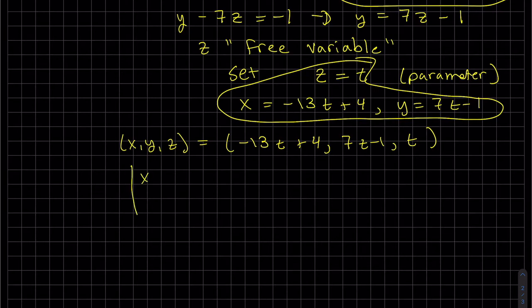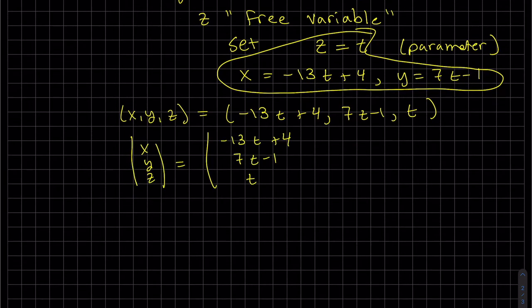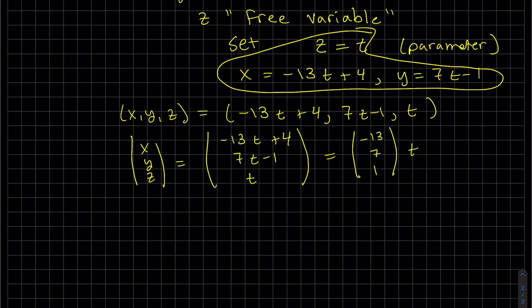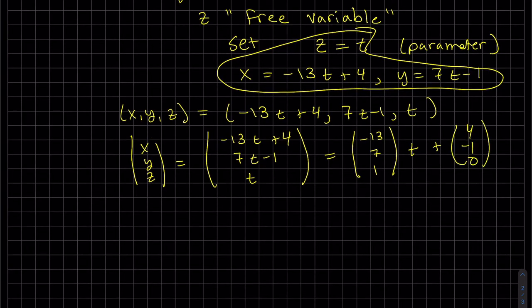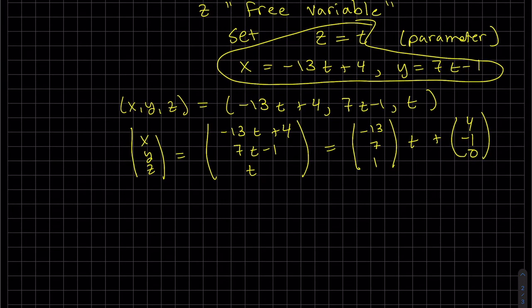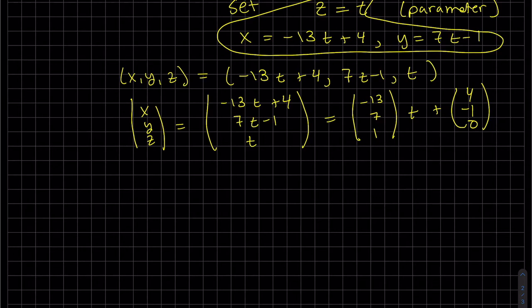Again, we can do it column wise, pull out that T and our constants. There's a zero there because there is no constant. So again, we'll be using these parameters throughout the course. It's easier to learn it now correctly.